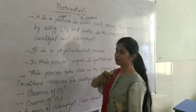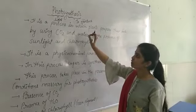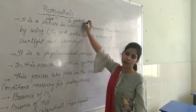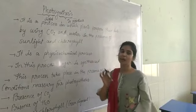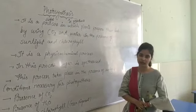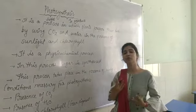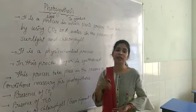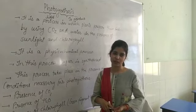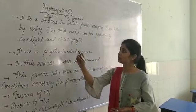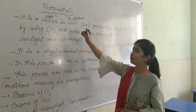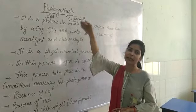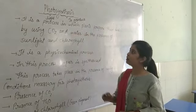To produce — right. In this process, the light energy is utilized to produce food. If we want to do something, we need energy. In the same way, if plants need to perform the photosynthesis process, for that they need the energy of light.